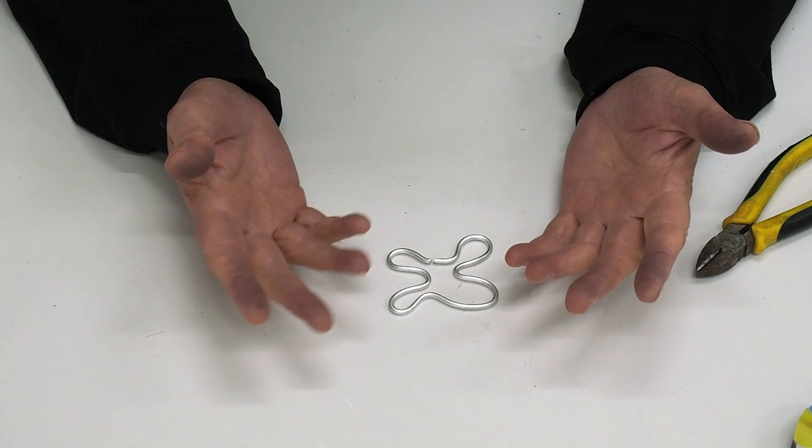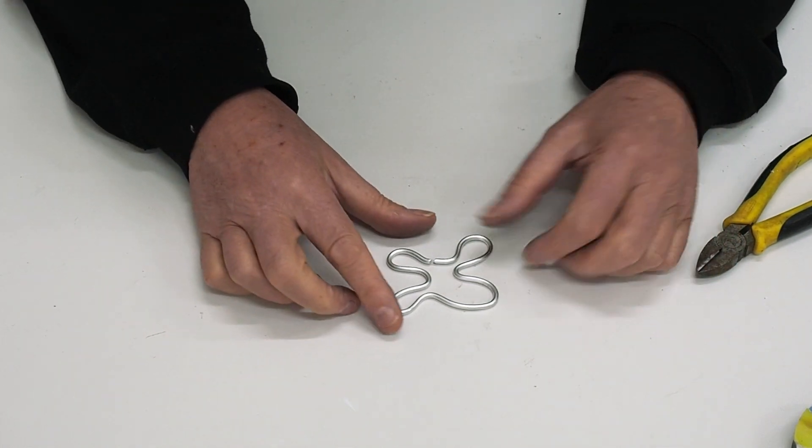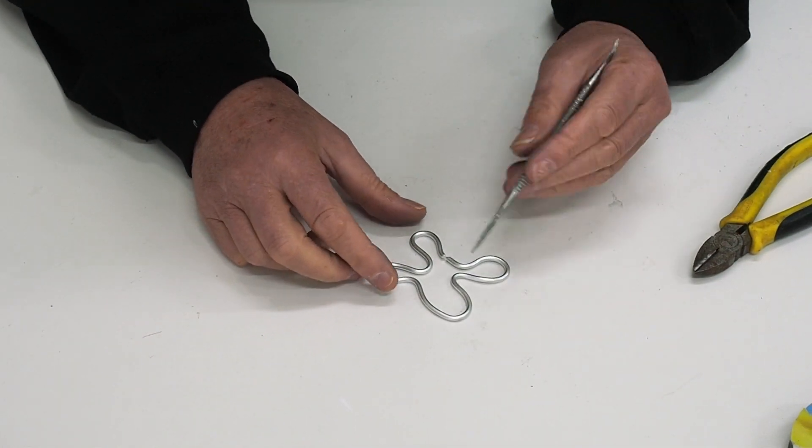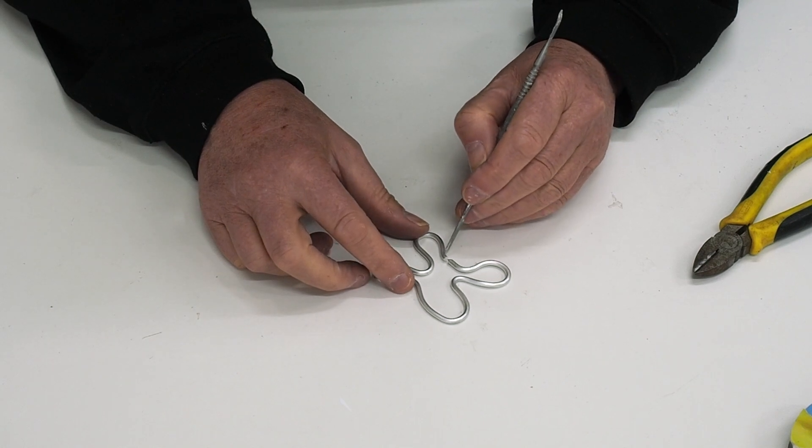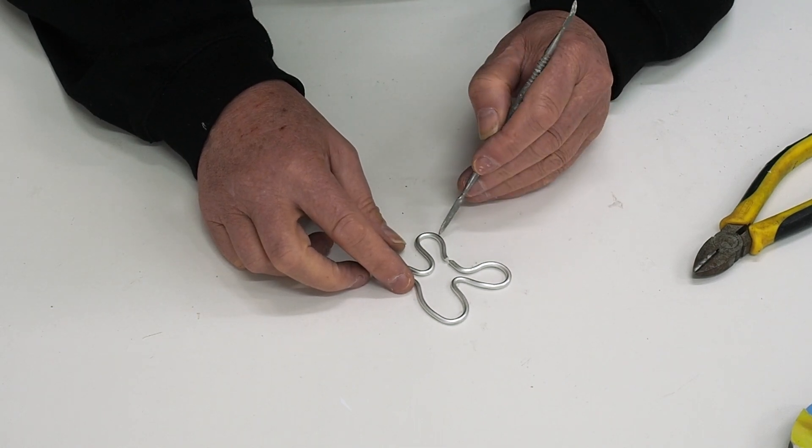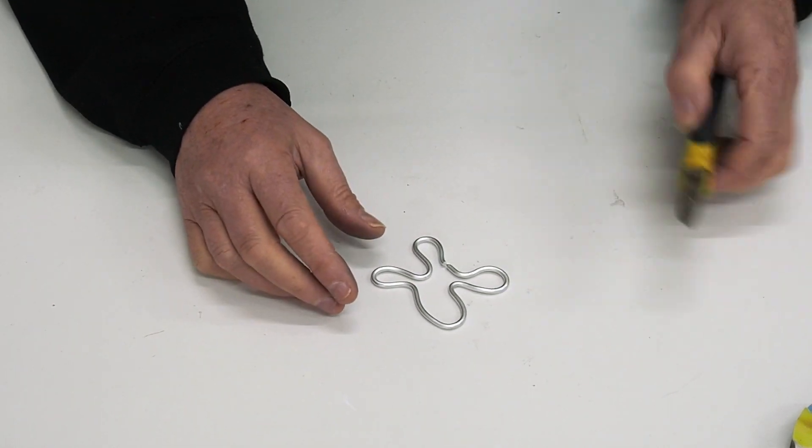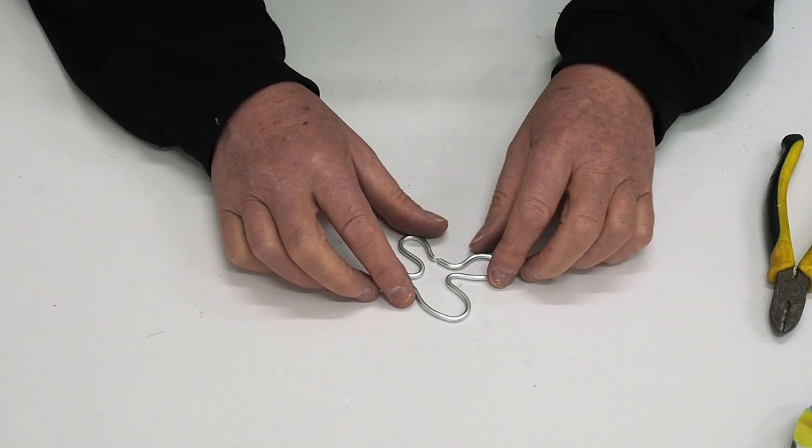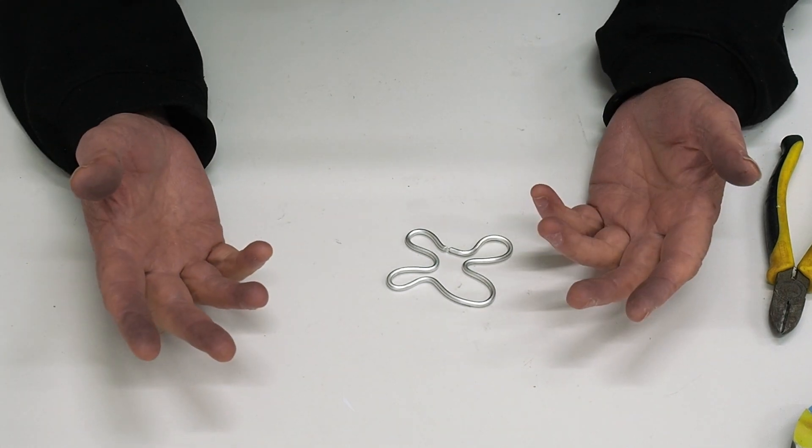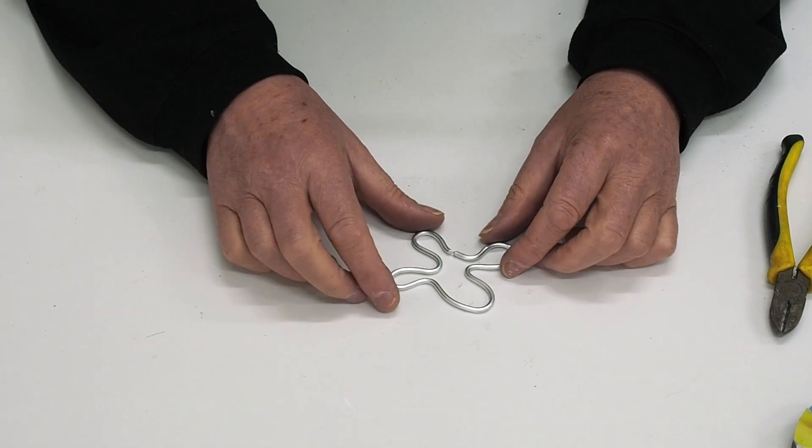Then you can fill that up with millefiori or whatever you're going to be using, whether it's smalti or whatever you want to use. Having this particular join here makes it easier than having it up here. If you have too much wire, you can just cut it off.